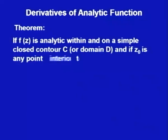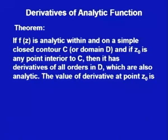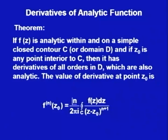With the help of the Cauchy integral formula, we will prove one important result: that an analytic function has all-order derivatives, and they are also analytic. If f(z) is analytic within and on a simple closed contour C, and if z₀ is any interior point, then it has derivatives of all orders in D, which are also analytic. The value of the nth derivative at z₀ is given by n! divided by 2πi times the integral along C of f(z)/(z − z₀)^(n+1) dz.